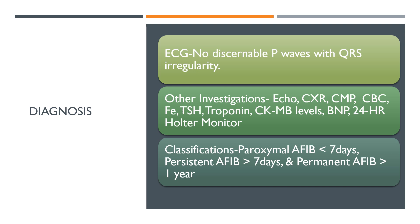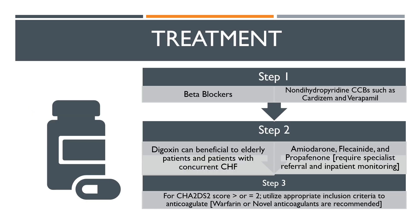Classification helps to guide treatment approach. The best initial treatment for atrial fibrillation in a stable patient is beta blocker or non-dihydropyridine calcium channel blockers such as Cardizem and Verapamil. The goal of pharmacotherapy is mainly to control ventricular rate, anticoagulate, and restore sinus rhythm if inclusion criteria is met.